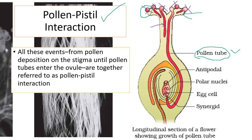Once the compatible pollen tube begins to grow, it grows all the way to the ovule. Inside the ovule, we have the embryo sac — the female gametophyte — and the pollen tube must enter the female gametophyte.